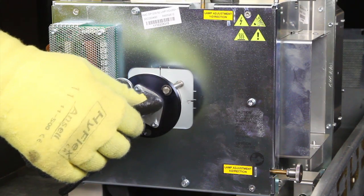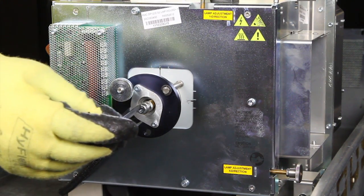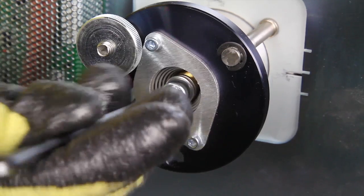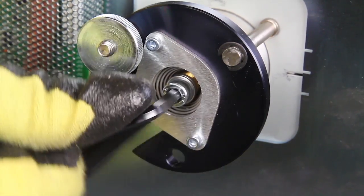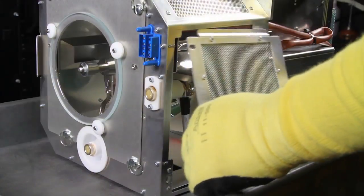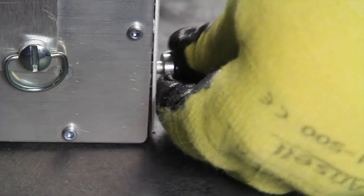Install the cathode locking pin at the rear of the lamp housing. Replace the lamp housing side cover, securing with the two thumbscrews.